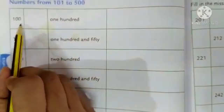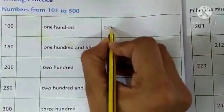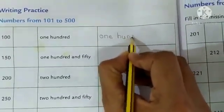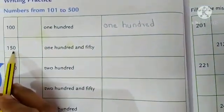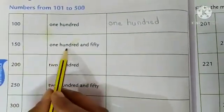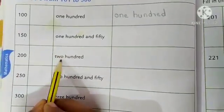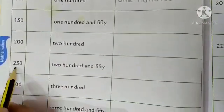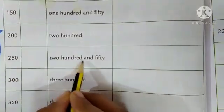On the next page, you can see the number names. That is 100. What is the spelling of 100? 150. O-N-E. 100. H-U-N-D-R-E-D. 100. Look. 150. Then, 200. T-W-O-H-U-N-D-R-E-D. 200. Then, 250. 250. That is 250.